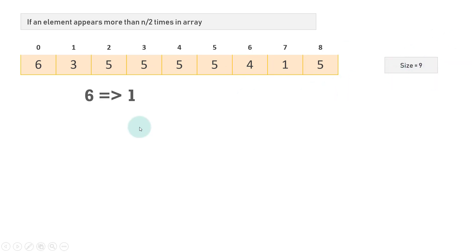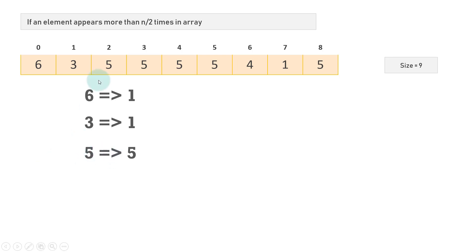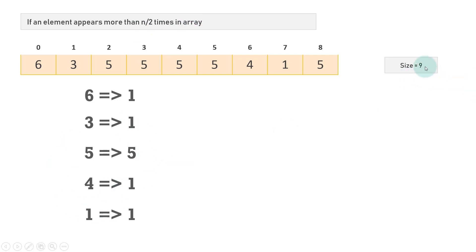So the size is nine. If you go through this array and find the count of element six, it appears only one time. Three also appears only one time, so three has a frequency of one. Now if you go for five, then five appears five times, so five is having a frequency of five. Four is appearing only one time, and one is appearing only one time. The majority element definition says that if the element appears more than n by two times, then it is majority. Here the size is nine, so half is equal to nine by two, which is four. That's why element five, appearing five times, is the majority element.